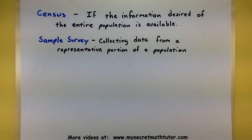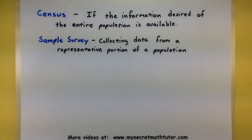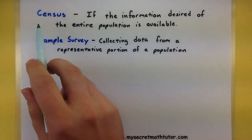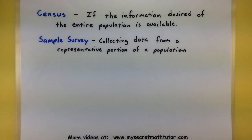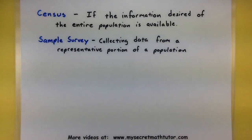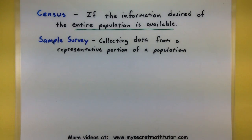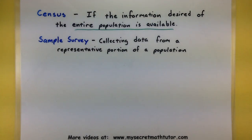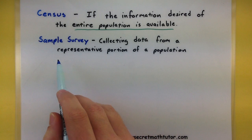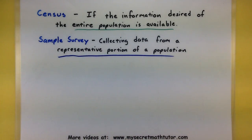One important distinction to make is that you might not even need to do sampling. For example, if you have access to all of the information of your population, then you can do what is called a census. That means you simply look at every single piece in your population. Now that's usually a great thing to do, but you can only do it if the entire population is available. Most of the time you do end up doing a sample survey of some sort, and that's where we collect data from a representative portion of the population.